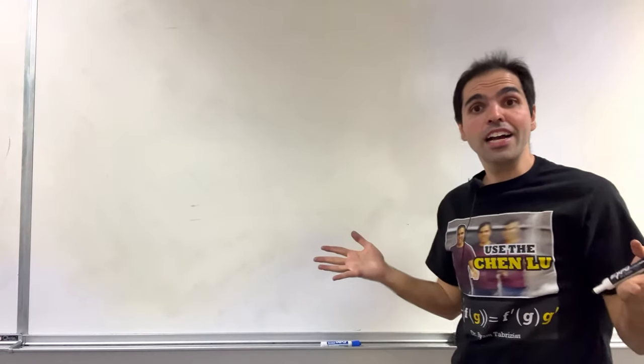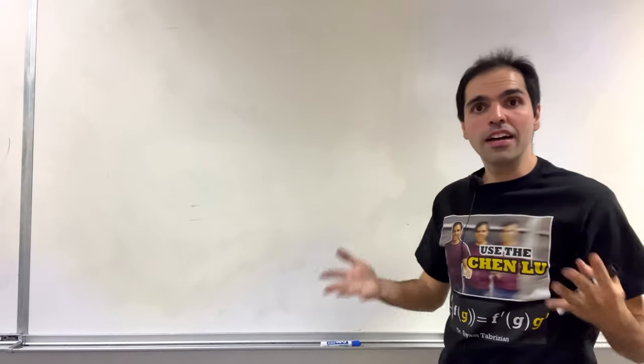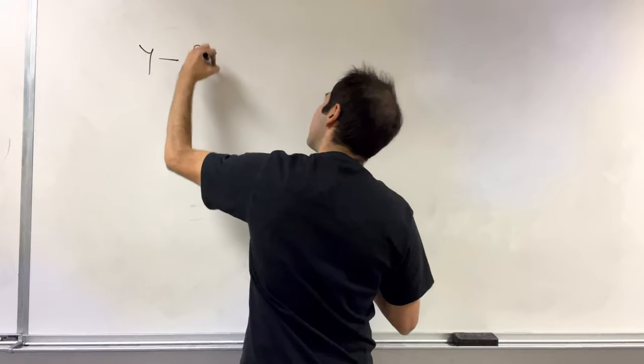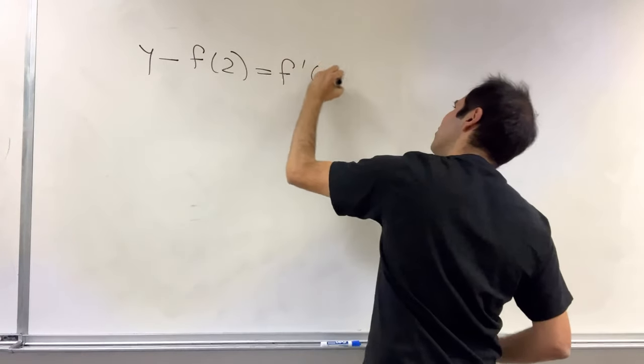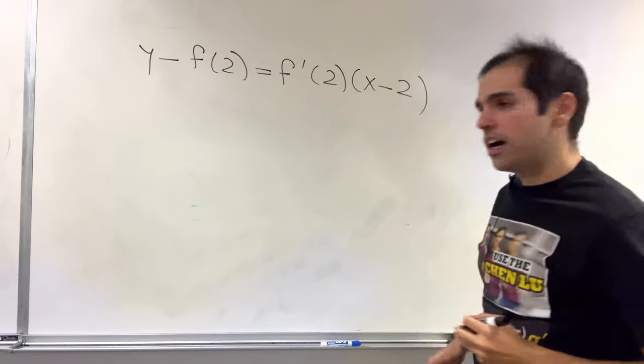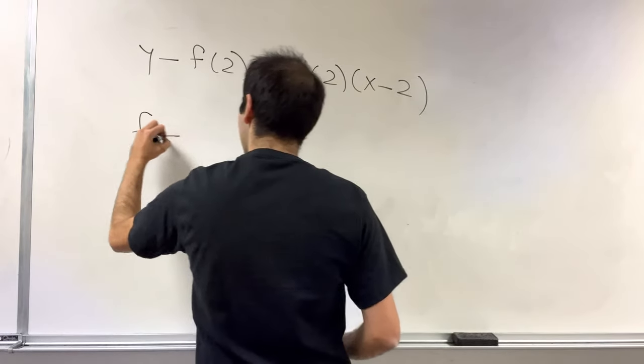And here we can actually show it explicitly, because what is the tangent line at 2? It's y minus f of 2 equals f prime of 2 times x minus 2. Now remember what our polynomial was.